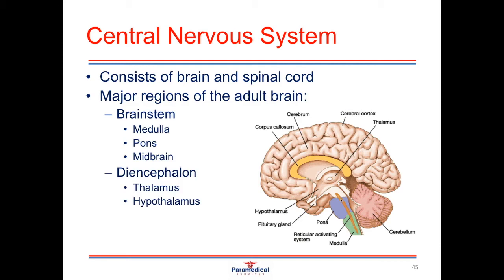The next section is called the diencephalon, and this comprises the thalamus and the hypothalamus. This area also transmits information from the brain stem right up to the cerebral cortex. It's also one of the areas that connects into the endocrine system by means of the pituitary gland, which is the head of the endocrine system and controls all of its actions.